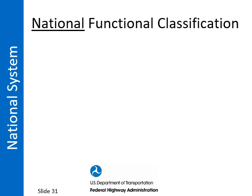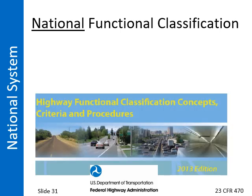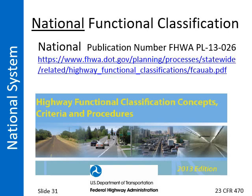The federal government has its own system of functional classification. Refer to the Code of Federal Regulations, 23 CFR 470, and the publication Highway Functional Classification Concepts, Criteria, and Procedures for more information about the National Functional Classification System. Classification is a systematic hierarchy of roads depending on the character of travel service provided. Mobility and access are the two main determining factors. Other factors are trip length, speed limit, traffic volume, and vehicle mix.